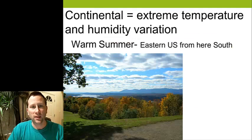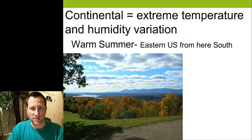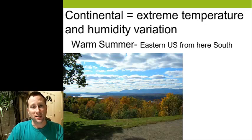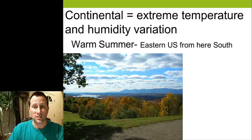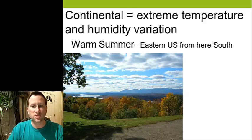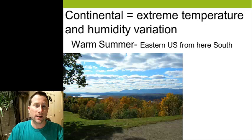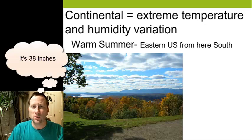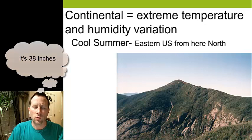Now we go into the continental climate. Water moderates climate, meaning winters are a little warmer than they ought to be and summers a little cooler. A continental climate, being far from the ocean, is just the opposite — very cold winters and very hot summers, with extreme temperature and humidity variations throughout the year. We'll start with warm summer continental, which is about where we are here, south to about Virginia. We have very cold winters and very hot summers, and it's not super wet — somewhere around 30 to 60 inches of rainfall a year.